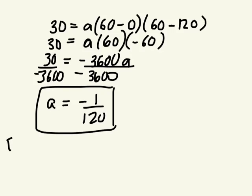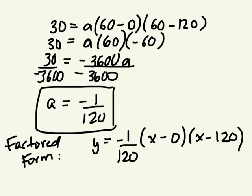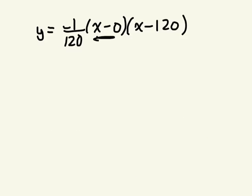So now that we know A, we can write this in factored form. But then I want you to come up with the equation in standard form. So Y equals negative 1 over 120, X minus 0, X minus 120. So let's put this into standard form now. X take away nothing is X. So I'm going to rewrite this to make it easier. Here, X take away 0 is X. But then I still have this X minus 120.